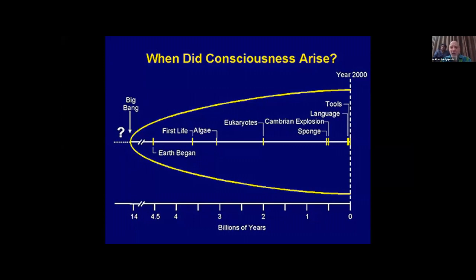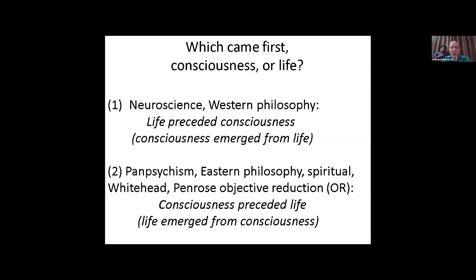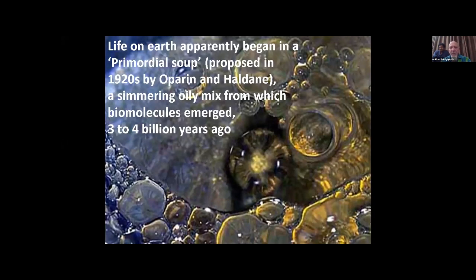Consciousness—when did consciousness arrive over the course of the universe? Was it fairly recently with tools and language? Further back at the Cambrian explosion, the origin of animal cells, the first life, or even before the universe began as some people like philosopher Colin McGinn and Roger's work would suggest? We can ask the question: which came first, consciousness or life? Neuroscience and Western philosophy would say life came first and consciousness emerged from life, maybe from information processing in the brain. But it's also possible that consciousness came first—in panpsychism, Eastern philosophy, spiritual approaches, Whitehead, and Penrose objective reduction—that consciousness preceded life and therefore life emerged from consciousness.